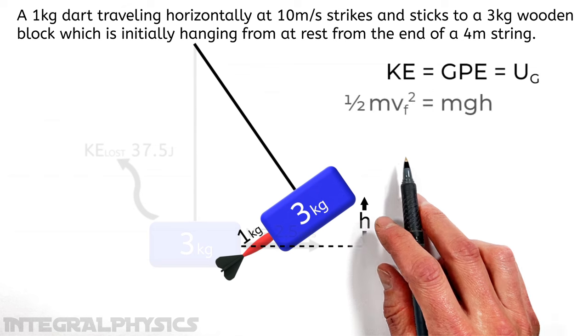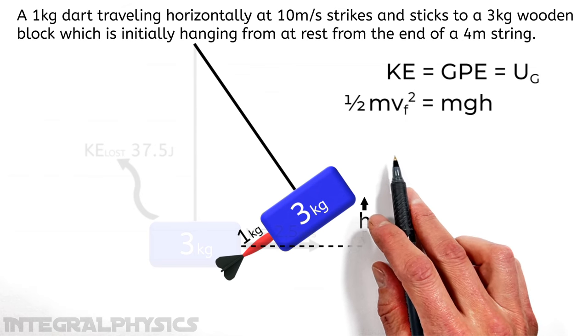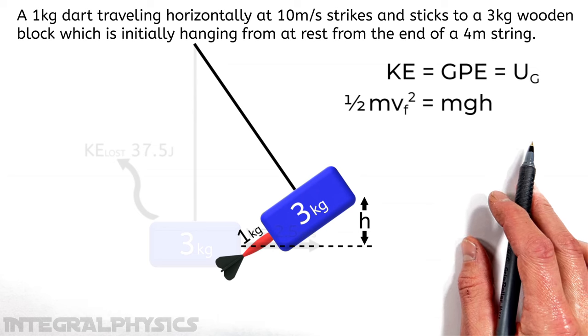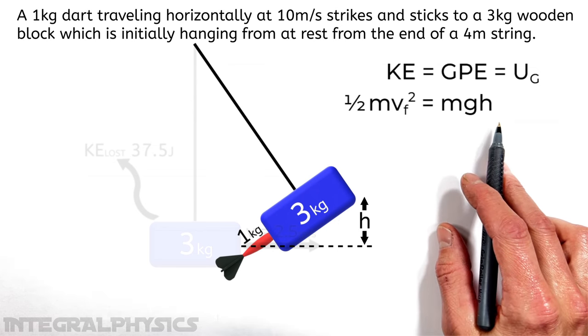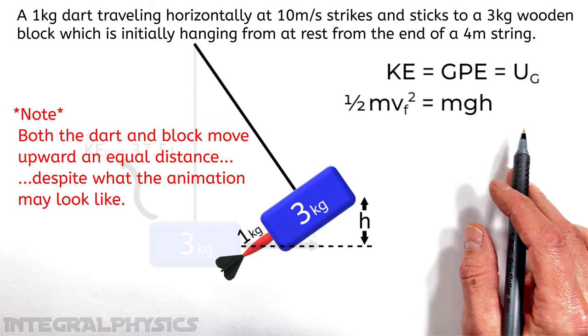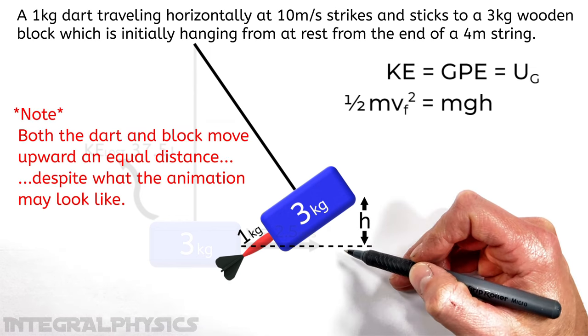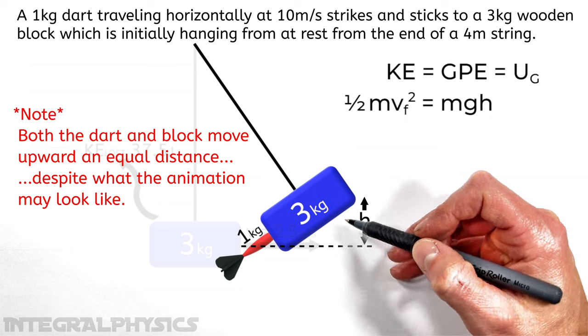So what we're going to do here is just set the kinetic energy, 1 half mv squared, equal to mgh, the total mass, multiplied by g, the acceleration due to gravity, multiplied by h, the height, which the dart and block are going to gain as they swing upward.